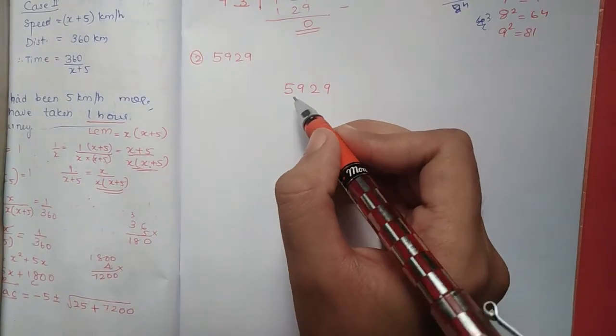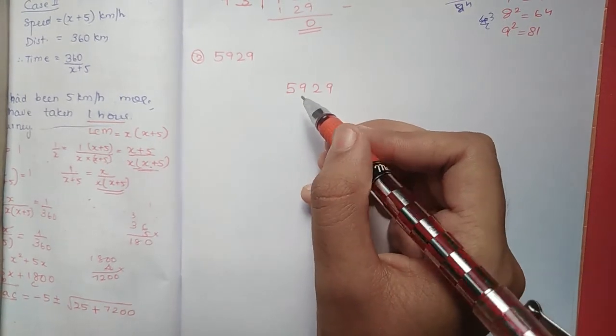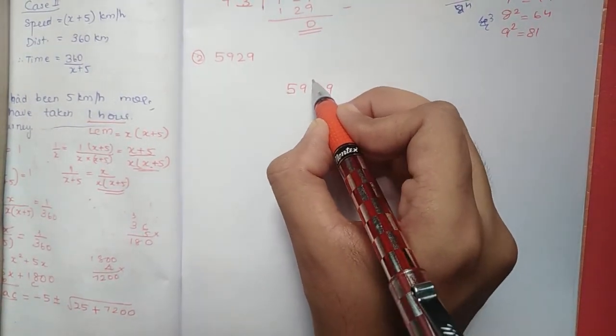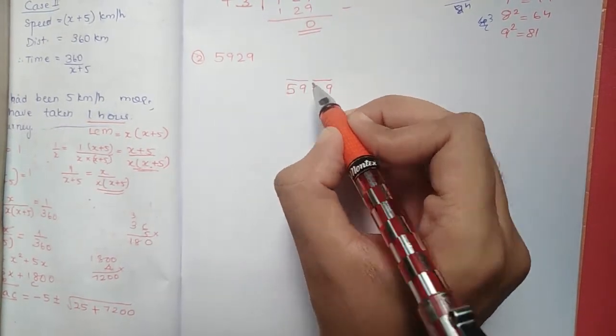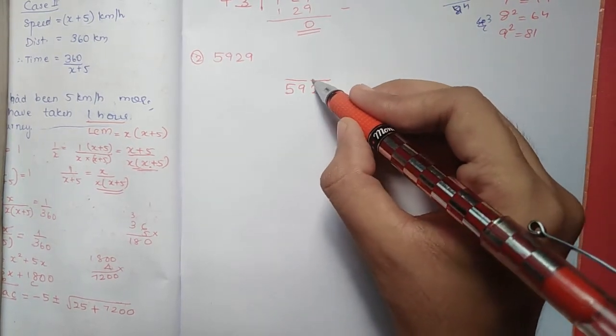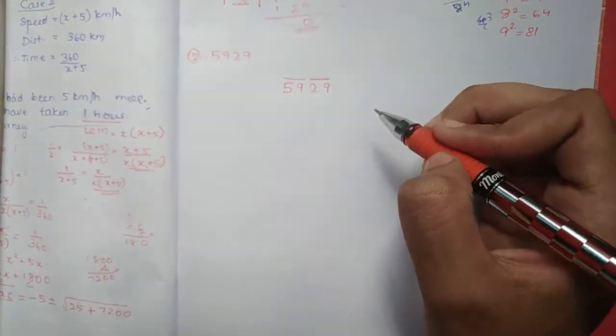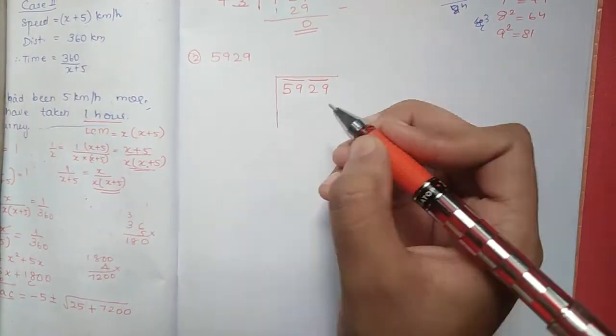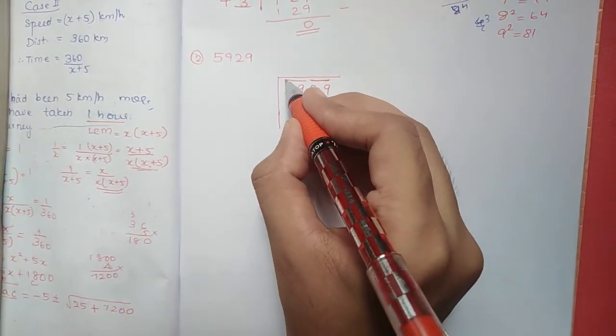Now we have number 5,929. You can separate the pairs. The number 29 goes with 59. We have two pairs.